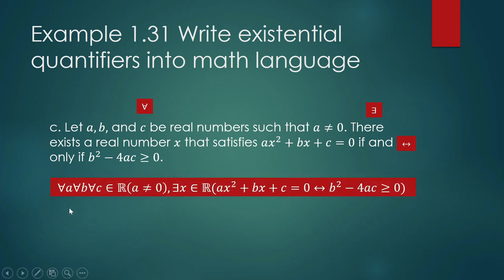We will not read it verbatim but in a way that sounds pleasant. The math sentence reads: for any real numbers a, b, and c where a is not equal to zero, there is a real number x such that ax² + bx + c = 0 if and only if b² − 4ac is greater than or equal to zero.